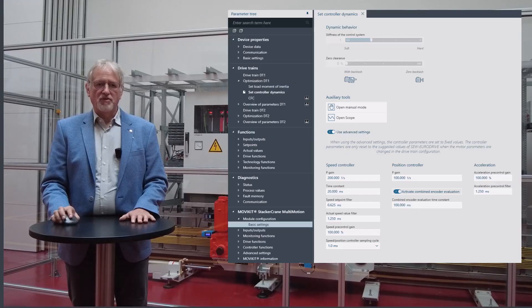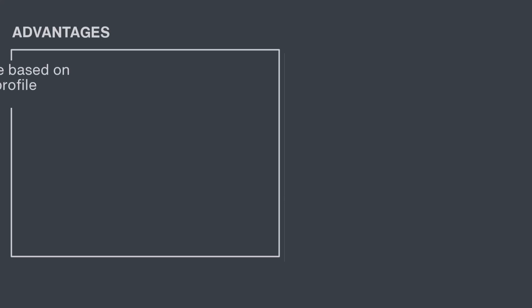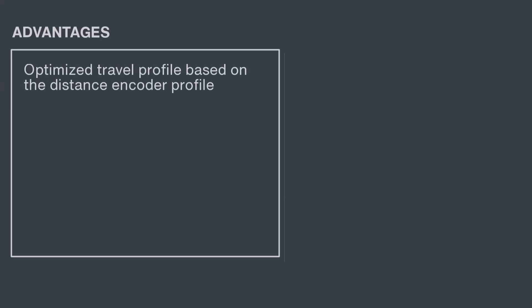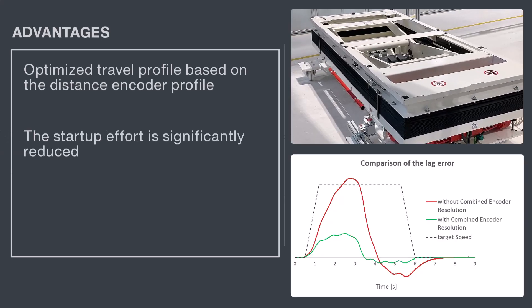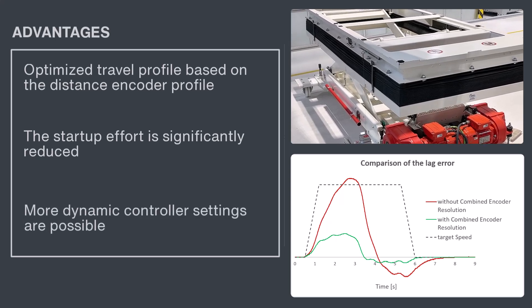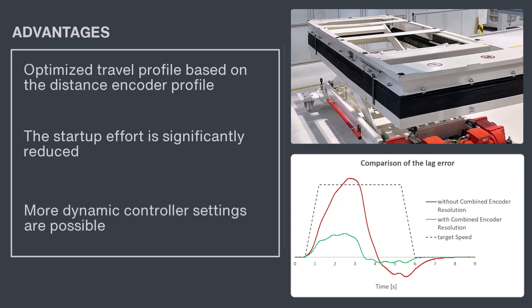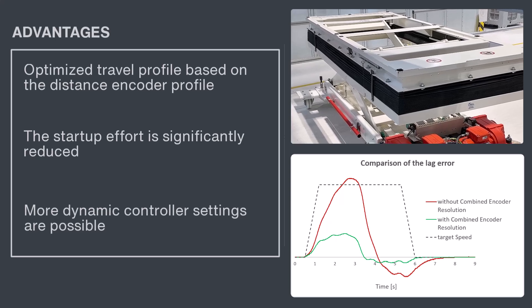This is automatic for the user without additional parameterization. The result is immediately visible in four advantages: optimized travel profile based on the distance encoder profile; the startup effort is significantly reduced; and more dynamic controller settings are possible, enabling significantly more dynamic positioning movement.